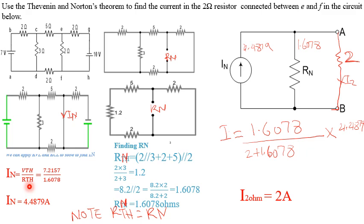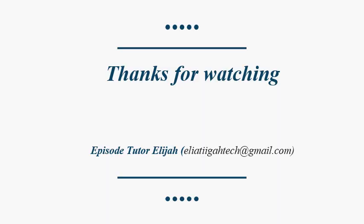If a question asks you to use both Thevenin's and Norton's theorem, after solving Thevenin's you can find the Norton's current IN using the formula IN = VTH / RTH, and note that RTH = RN, so you don't waste time recalculating. Thank you very much for watching — if this video was helpful, please like, share, subscribe, and comment. I'll do simulations to confirm this. Thank you very much!